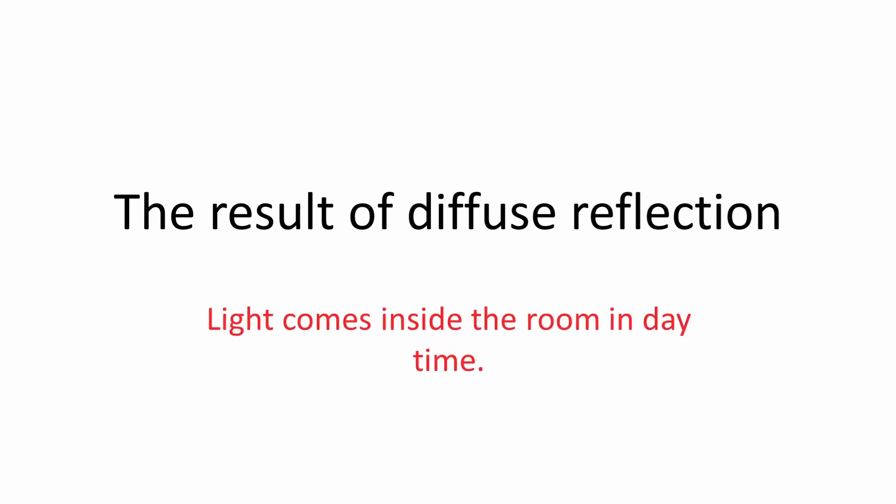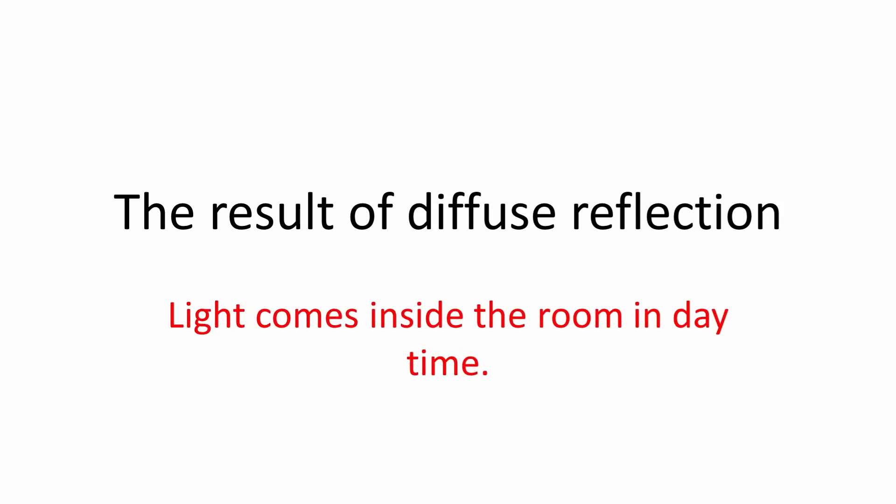First question: What is the result of diffuse reflection? Answer: Light comes inside the room in daytime. This diffuse reflection is a result of light entering the room.